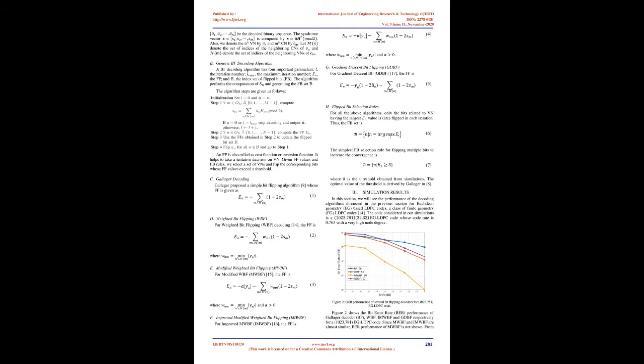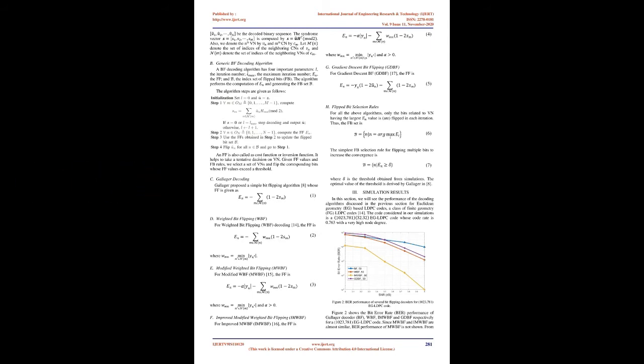Most of them try to improve the VN's reliability metric, the FF, and/or the method of selecting the flipped bits, achieving different degrees of bit error rate, BER, and convergence rate performance enhancements at the cost of higher complexity. Figure 1 illustrates the general classification of hard decision decoding approaches available for LDPC codes: Classification of Hard Decision Decoders. This manuscript attempts to give a short survey of some of the most used bit-flipping algorithms and their variants. Section 2 describes the various bit-flipping algorithms and their mathematical representations. In Section 3, we give simulation results of the discussed algorithms for various LDPC codes.